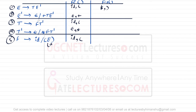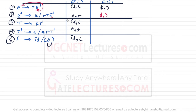Next is E'. To find the FOLLOW of E', look at all the right-hand sides of productions for the locations where we have E'. There are two such locations. In both cases, nothing follows E', so FOLLOW of E is also the FOLLOW of E'. Hence, FOLLOW of E' contains dollar and closing bracket.